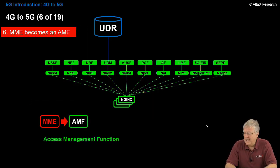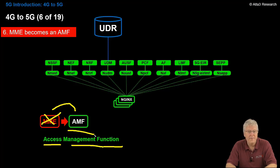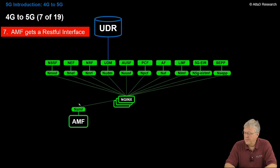Our mobility management entity becomes the AMF. That's the access management function. MME gone. AMF in. The AMF is going to need a representational state transfer interface as well. So we give it a RESTful interface and connect it to NGINX.